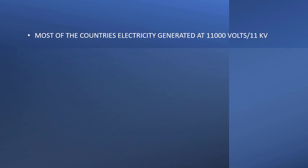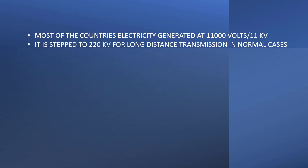In most countries, electricity is generated at 11 KV (11,000 volts) and it is stepped up using a step-up transformer to 220 KV or more for long-distance transmission. In India, the maximum transmission voltage is 765 KV, owned by the Power Grid Corporation of India.